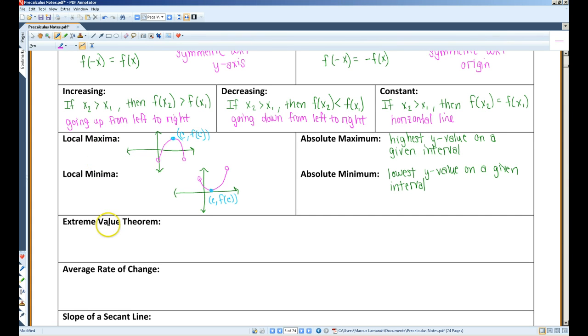When the graph of a function is decreasing to the left of x equals c, and is increasing to the right of x equals c, then at c, the value of f is the smallest. This value is called the local minimum. Once again, minima is plural of minimum.